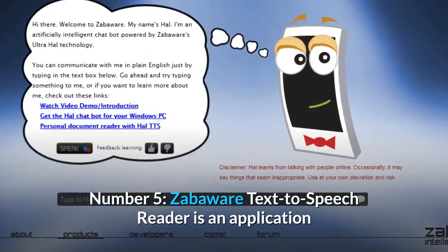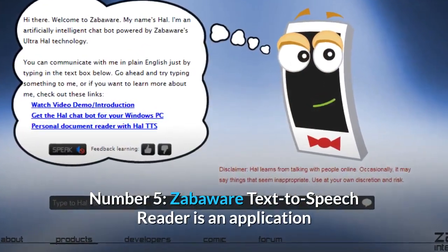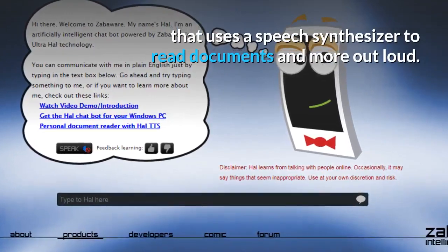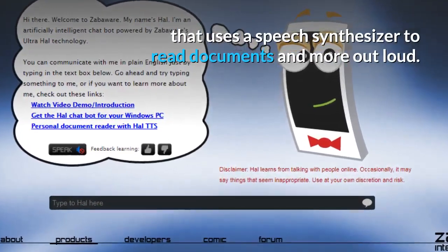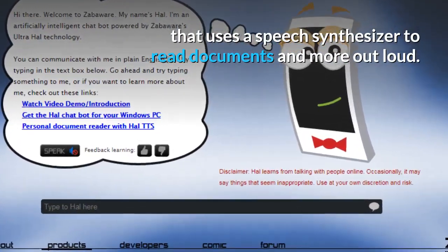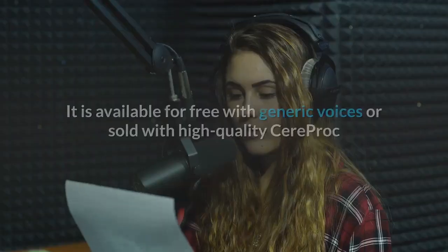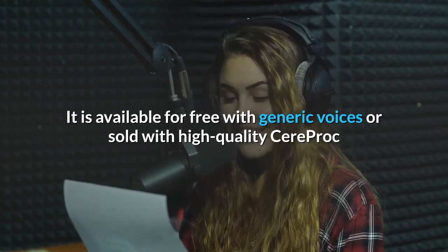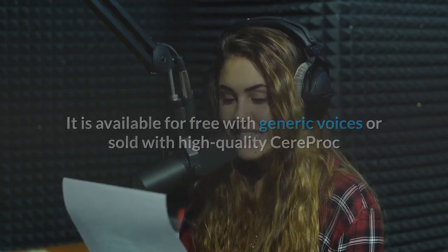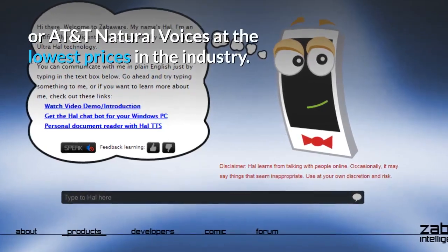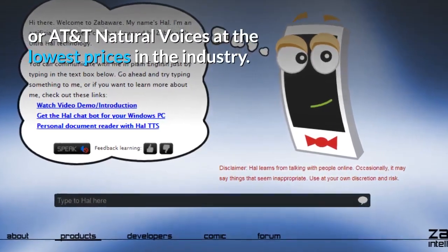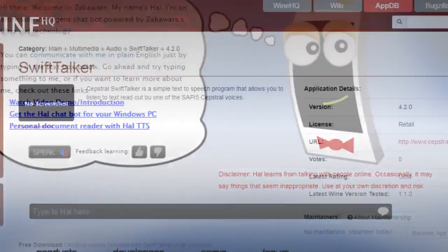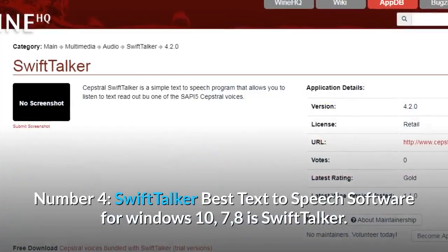Number 5: Zabaware Text-to-Speech Reader is an application that uses a speech synthesizer to read documents and more out loud. It is available for free with generic voices, or sold with high-quality Seraproc or AT&T natural voices at the lowest prices in the industry.